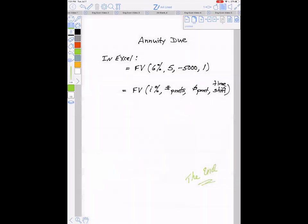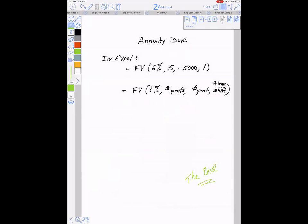If you want to do this in Excel, here's the formula for an annuity due in Excel. This is what you would enter into the cell for this example. The general form looks like this: equals FV, parentheses, the interest rate, the number of payments, the dollar amount of one payment, and then the time shift, how far you're going back in time, just one year to go from annuity to annuity due. So you might try that in Excel with some different scenarios.